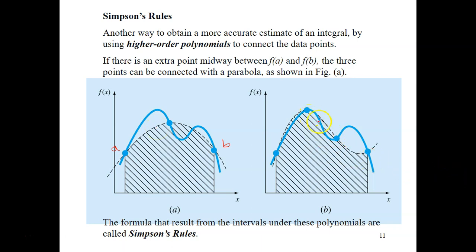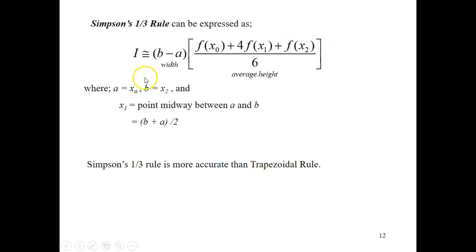In another variant, we use four points instead of three — introducing two additional points between limits a and b — and connect all four points using a higher order polynomial parabola. The formula for Simpson's Rule uses fx0 for the first point at a, fx1 for the middle point we introduce, and fxb for the last point. The midpoint between a and b is calculated as (b + a) / 2.